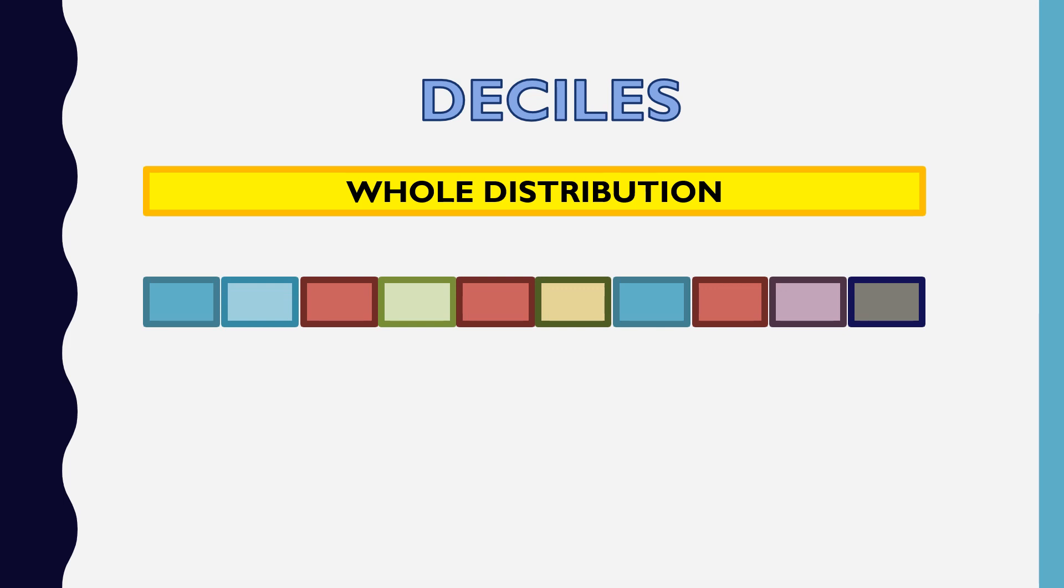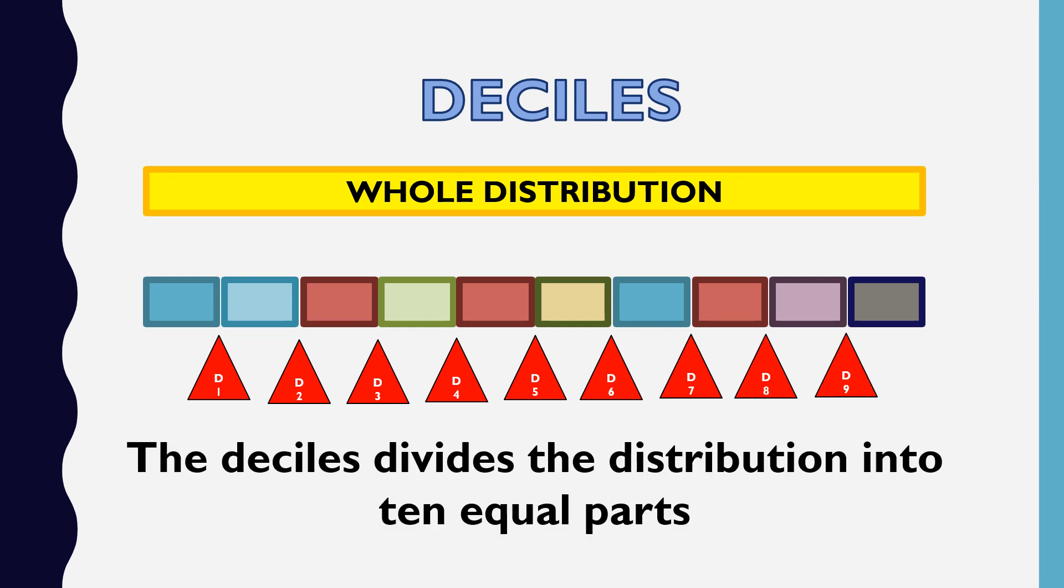Let's go to deciles. Kung meron tayong whole distribution, ang ginagawa ni deciles is to divide the whole distribution into ten equal parts. Meron tayong deciles 1, deciles 2, deciles 3, deciles 4 or the fourth deciles, deciles 5, deciles 6, the 7th deciles, the 8th deciles, and then the 9th deciles. The deciles divide the distribution into ten equal parts.